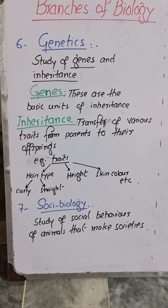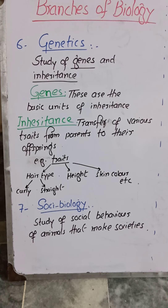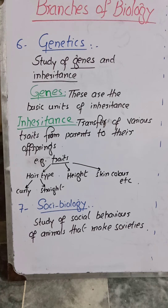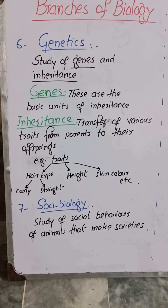So what are genes? These are the basic units of inheritance. Genes are responsible for the process of inheritance — they are important for it. So what is inheritance? Inheritance is the transfer of various traits from parents to their offspring.